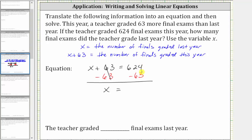Subtracting, four minus three is equal to one, and 62 minus six is equal to 56. The solution is x equals 561, which is the number of final exams the teacher graded last year.